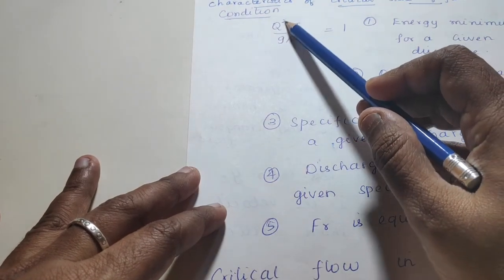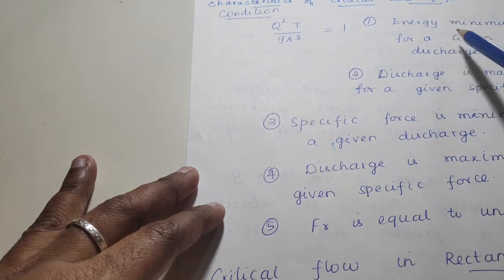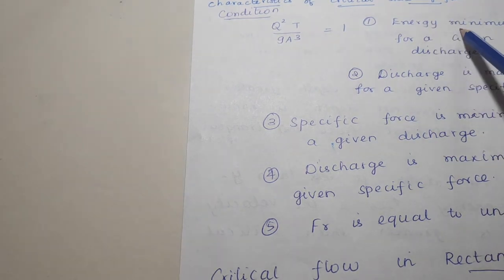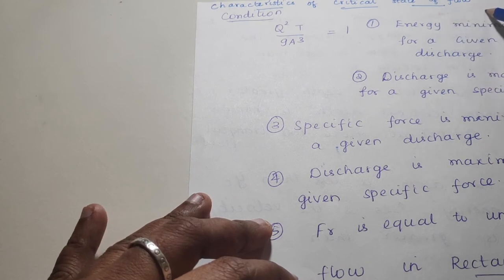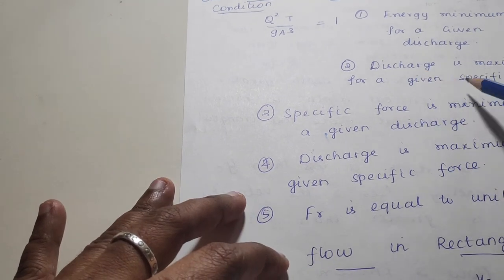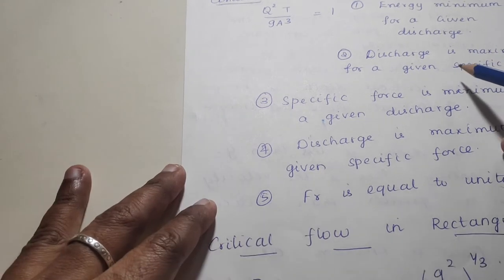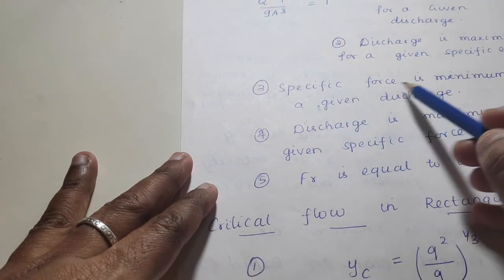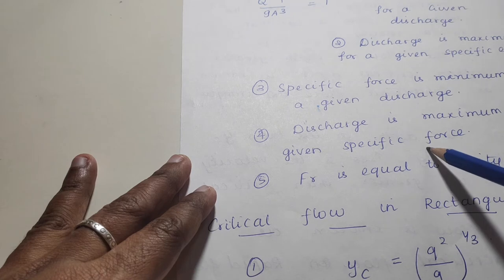The condition is q²T divided by gA³ equals 1, and for a particular discharge the energy is minimum. For example, for 10 m³/s you will have only one energy — that is E minimum. The discharge is maximum for the given specific energy, and for that energy the discharge will be maximum. Also, the specific force is minimum for a given discharge, and discharge is maximum for a specific force.